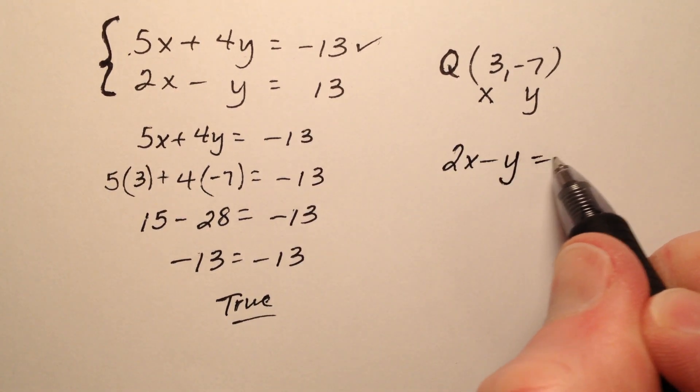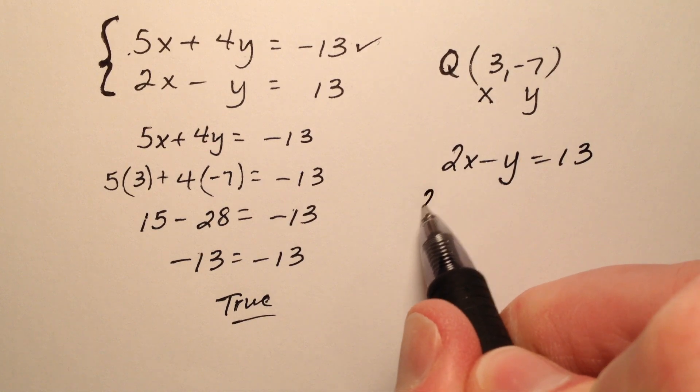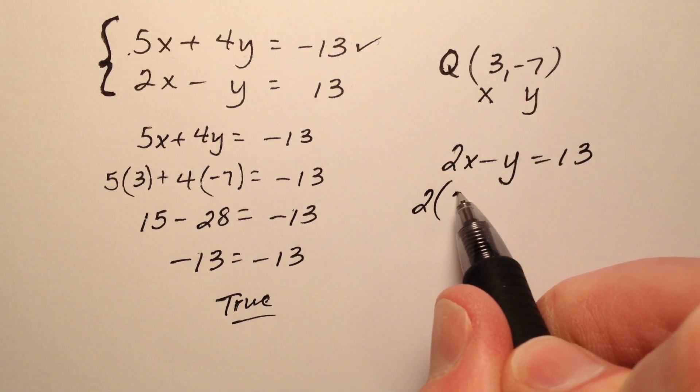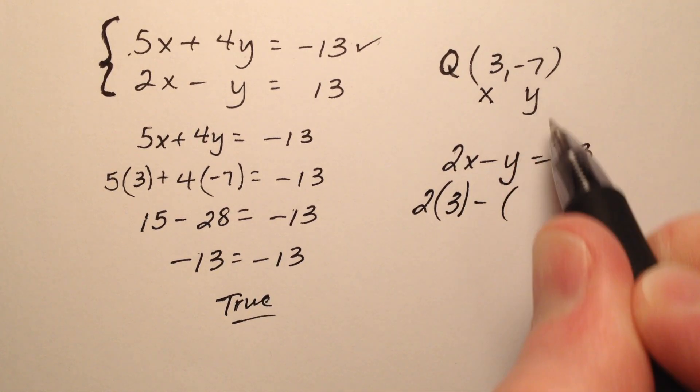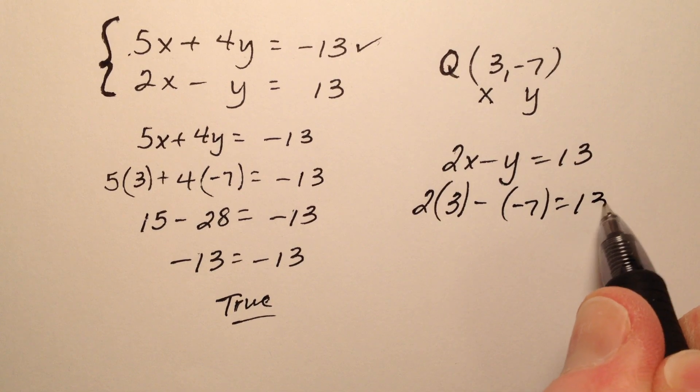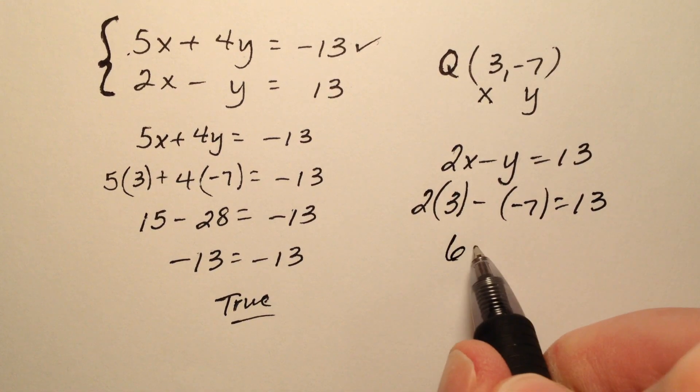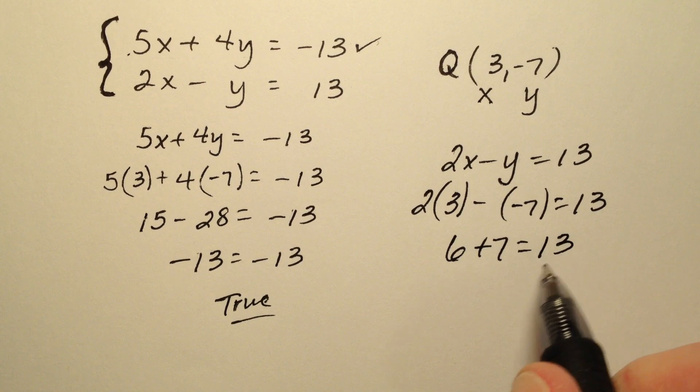So 2x minus y equals 13. 2 times my x, which is 3, minus my y, which is negative 7. So 6 plus 7 equals 13.